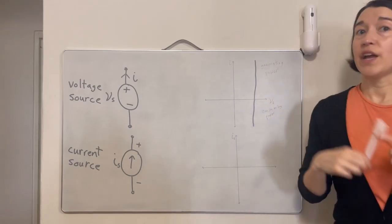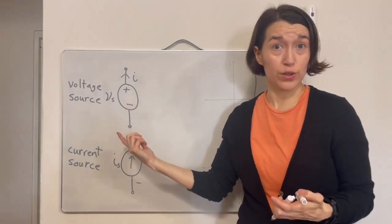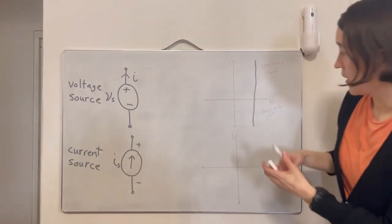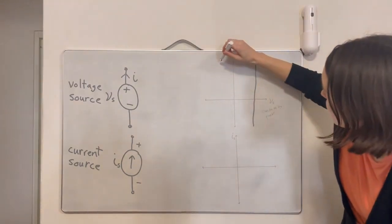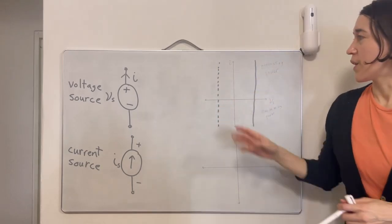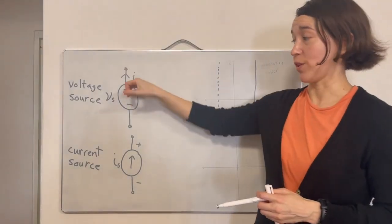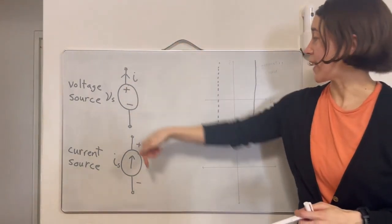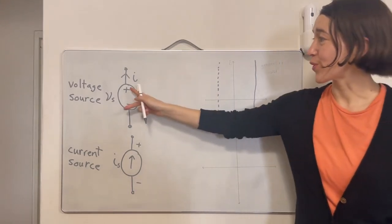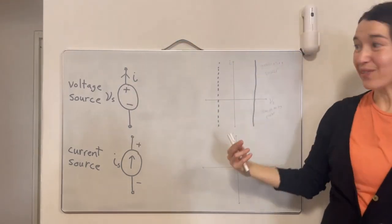You could also ask: can a voltage source have a negative voltage? Yes — if Vs equals negative five, for example, it would look like this on the IV curve (drawing a dotted line). This would represent positive current coming out with a negative polarity. If we look at a negative voltage with current going out, it would actually be generating power.